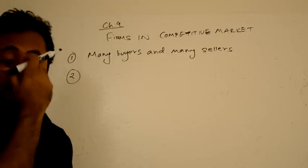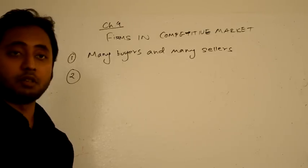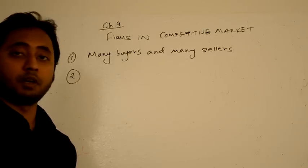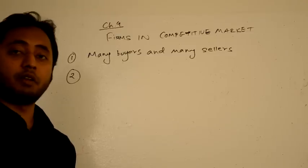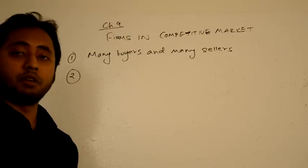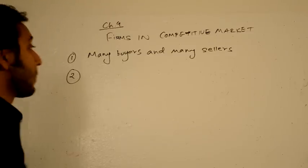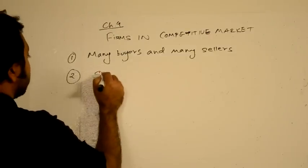The second characteristic is that all the sellers in the market sell similar products, if not exactly the same products. So every seller in the market is producing very, very similar products. An example of that could be a fish market.